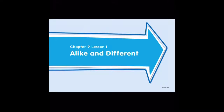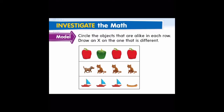Hi boys and girls, let's go over our lesson for alike and different. Here we have rows of objects. Can you look at the top row of the peppers? Can you see which one of those peppers is different? The green pepper is different, so we're going to put an X on that pepper. Let's circle the objects that are alike — the red peppers are alike.